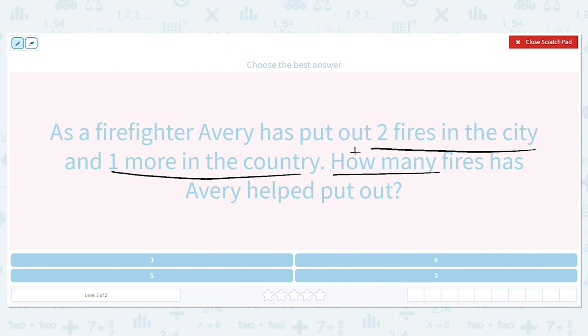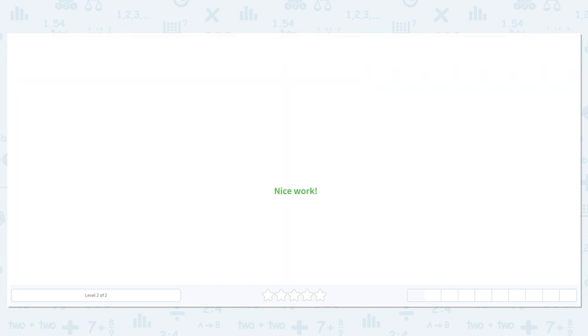If they said how many more, we'd subtract. But we're adding. So we're adding two plus one. What is two plus one? Three. So she put out three fires in all.